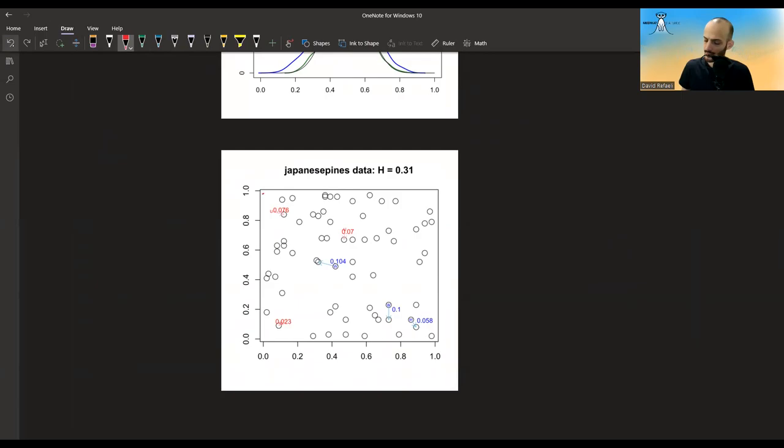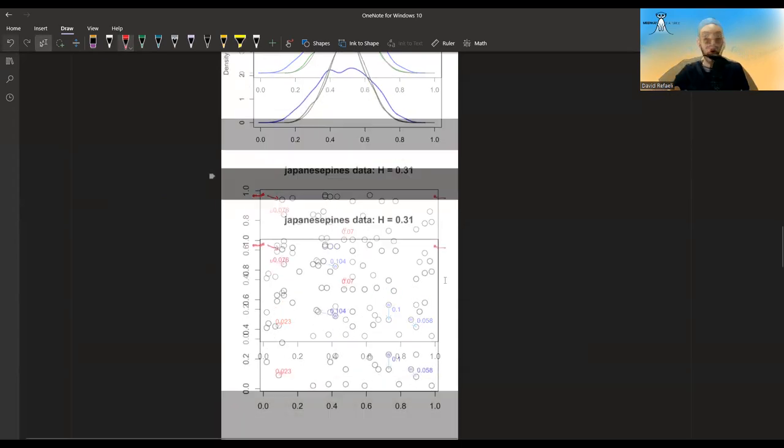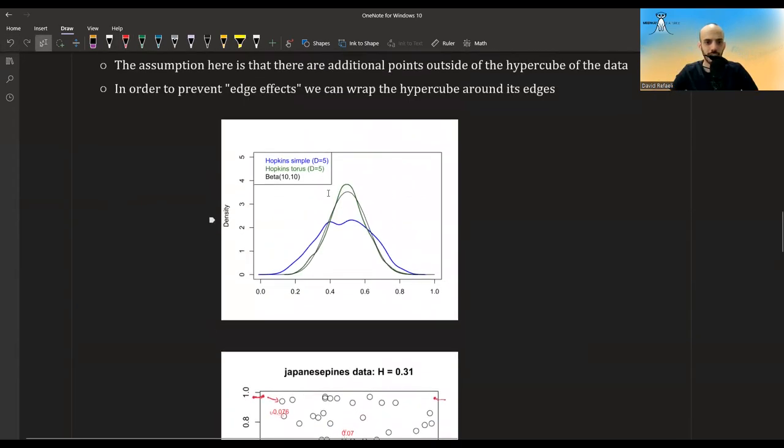Suppose, for example, that I have some point here and the distance to the nearest point is this over here. But what if I have another point here? Then what happens with torus geometry is that I consider the distance from here to here. So I consider it as if it's wrapped. So this point is transferred here, and then the distance is this distance over here. And this could help with the accuracy of the statistic.